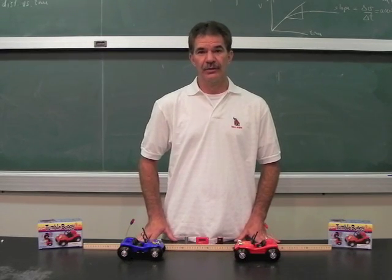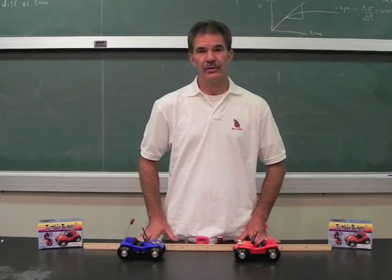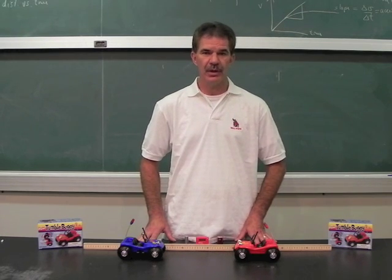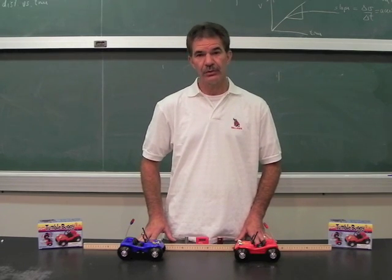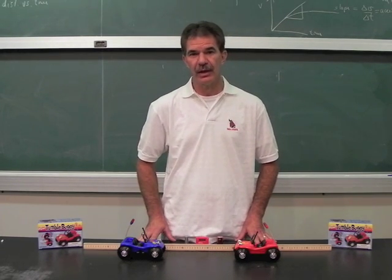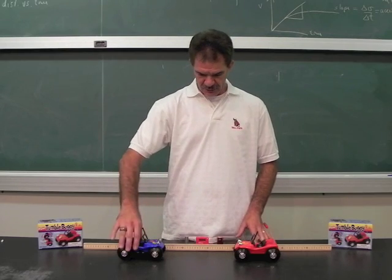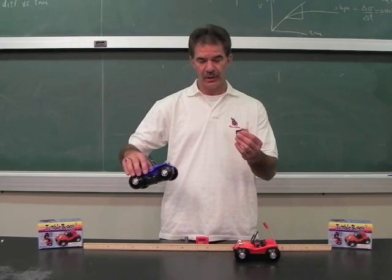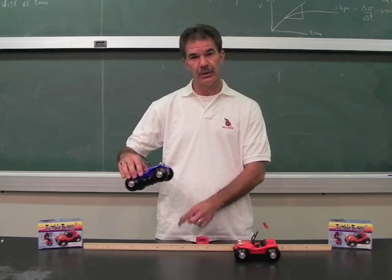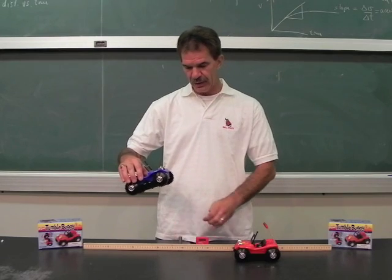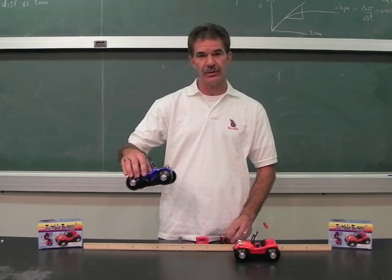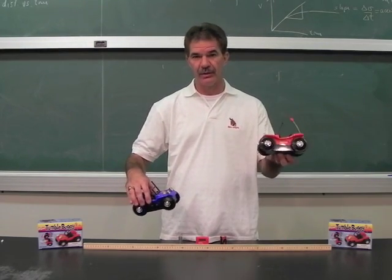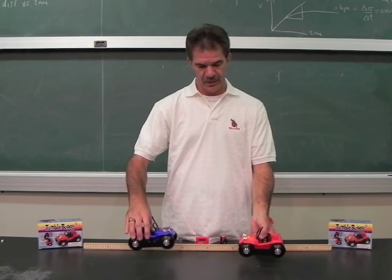Not only are the constant velocity cars good for investigations of constant motion, they're also useful for investigating relative speeds. I've replaced one of the C-cells in one car with an aluminum spacer, which will give it a substantially lower speed than the car powered by two C-cells.